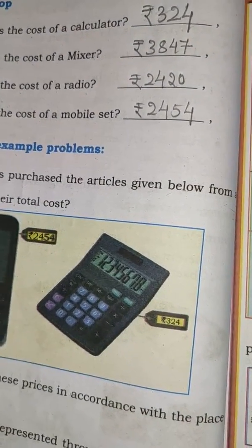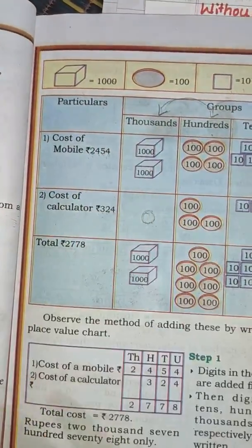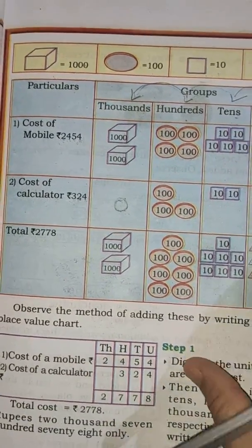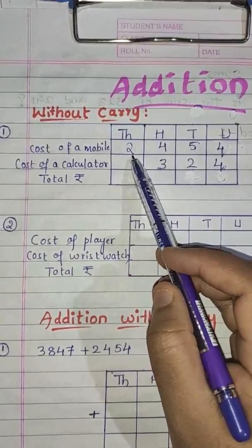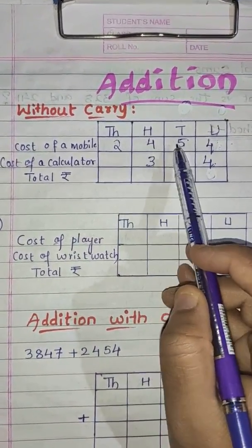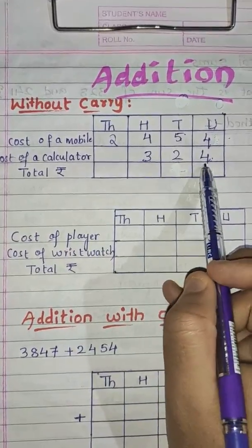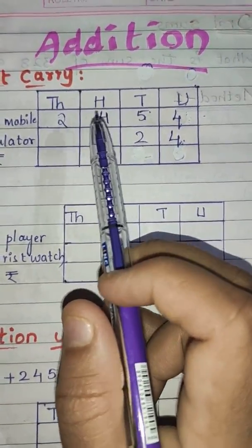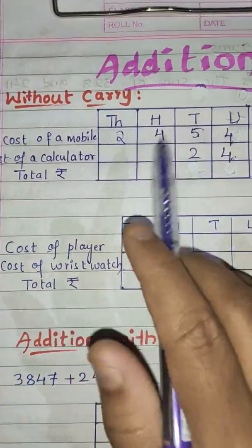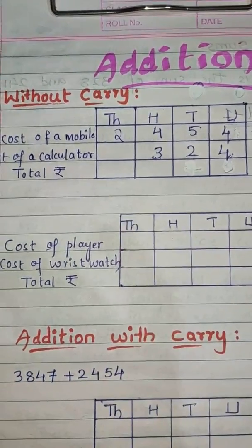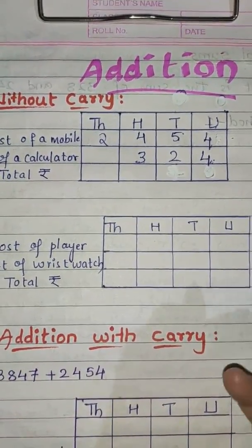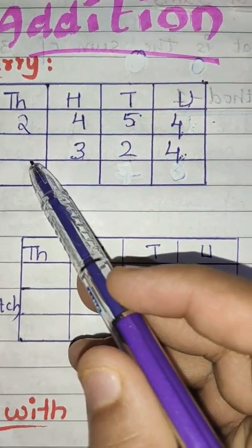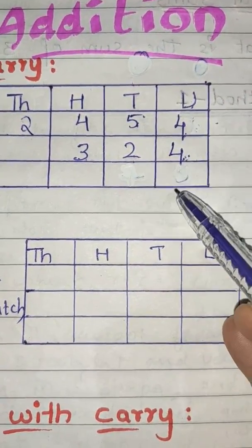In the same way, we will arrange these costs in the place value chart. The mobile cost is 2,454 and the calculator is 324. This is also called without carry, or without grouping. Now you tell me from where we have to start adding? We have to start adding the number digits from the unit place.